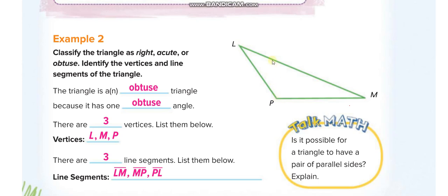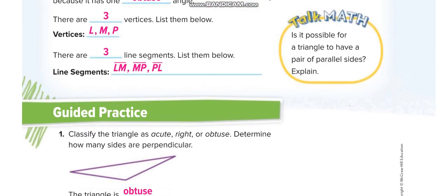Looking at this next triangle, if you put your D-shape protractor here, you can see the angle is more than 90 degrees — an obtuse angle — so it is an obtuse triangle. It has three vertices: L, M, and P, and three line segments: LM, MP, and PL.